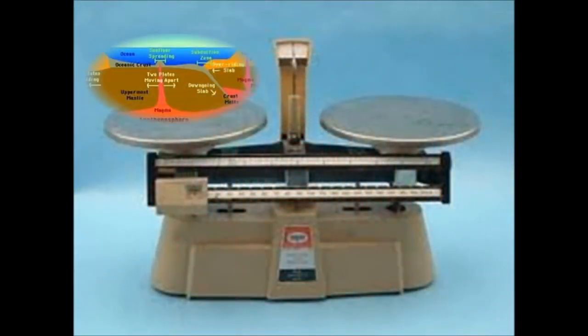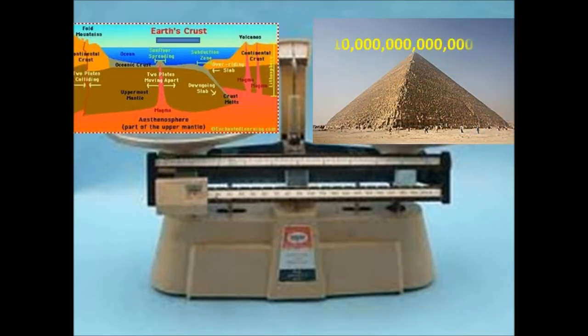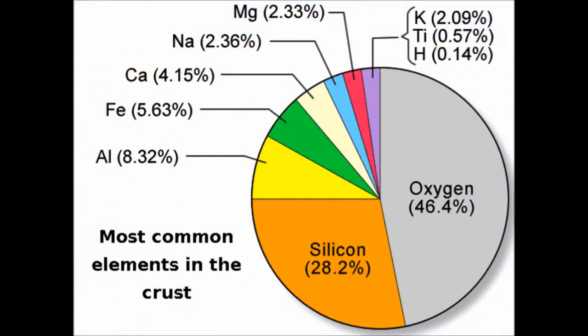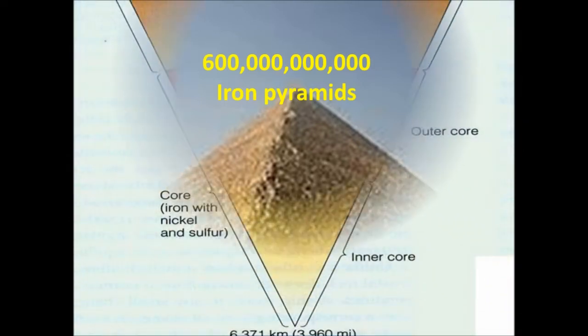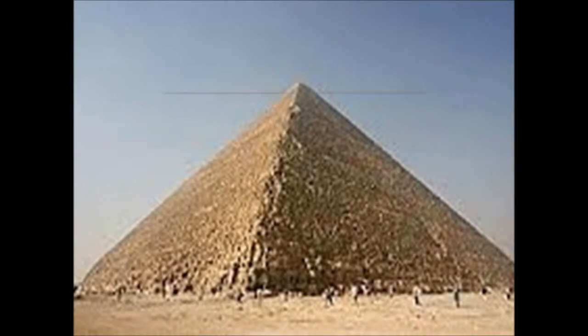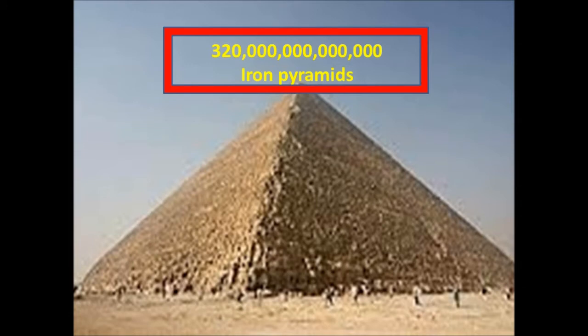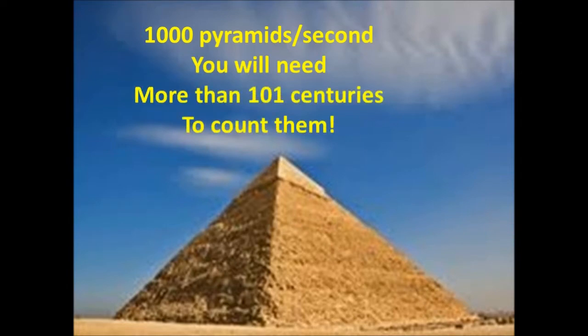But even then, this thin rim is equal in weight to 10 trillion Khufu pyramids. And from this crust, we are able to build 600 billion iron pyramids like Khufu's. Even more, from the core, we are able to build 320 trillion iron pyramids like Khufu's. Counting 1,000 pyramids per second, we will need more than 100 centuries to count them.